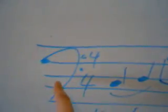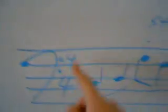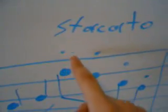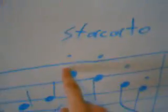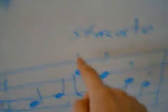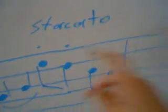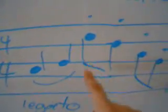Now I'll show you staccato versus legato style playing. Staccato looks like little dots placed over the notes, meaning you play them detached. I think of those dots as popcorn — every note is just popping off, short and separated like that.